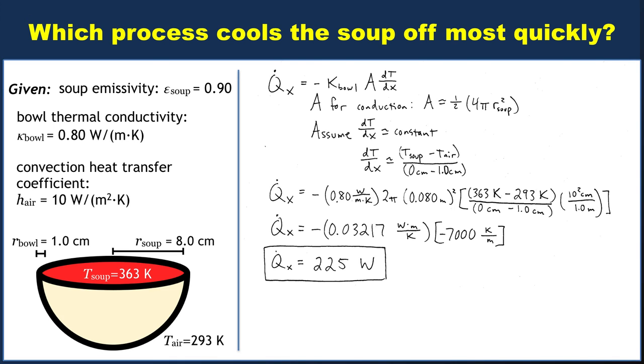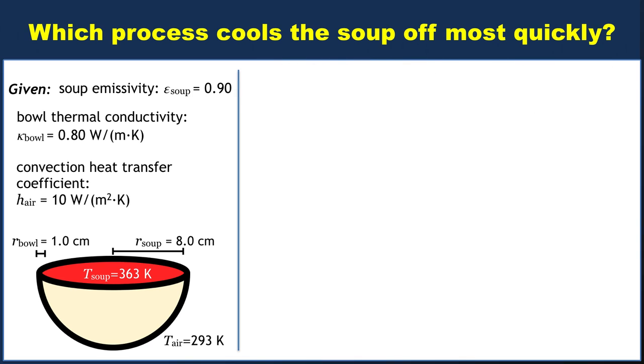The final process that we're going to deal with is convection, and as I indicated before, the convection heat transfer coefficient is probably the most approximate value in this problem. That's okay. This is the expression for convection, and again, it has to do with the difference in temperatures. If the soup ended up being the same temperature as the air, there would be no relevant convection, no net heat transfer.